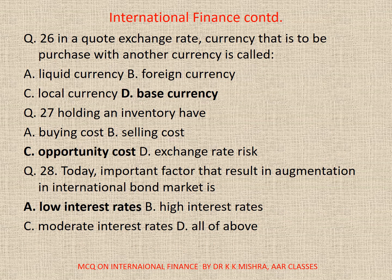Question 26. In a currency exchange rate, the currency that is to be purchased with another currency is called: A. Liquid currency. B. Foreign currency. C. Local currency. D. Base currency. Correct option is D. Base currency.